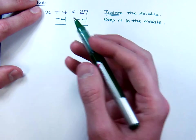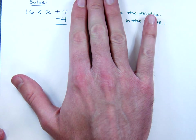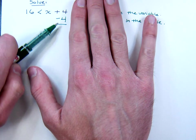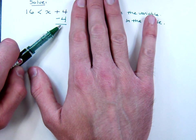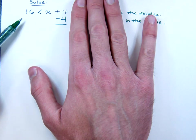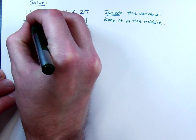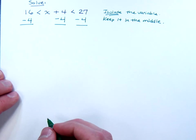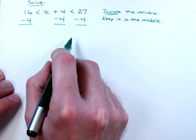But I don't have just one inequality. I have this other side of the inequality. Well, if I have 16 that's less than x plus 4, I would subtract 4 to get the x by itself. But if I subtract 4 from this side, I also have to subtract 4 from this side. So what you see that we've done here is that we subtracted the same amount from all 3 sides of this inequality.